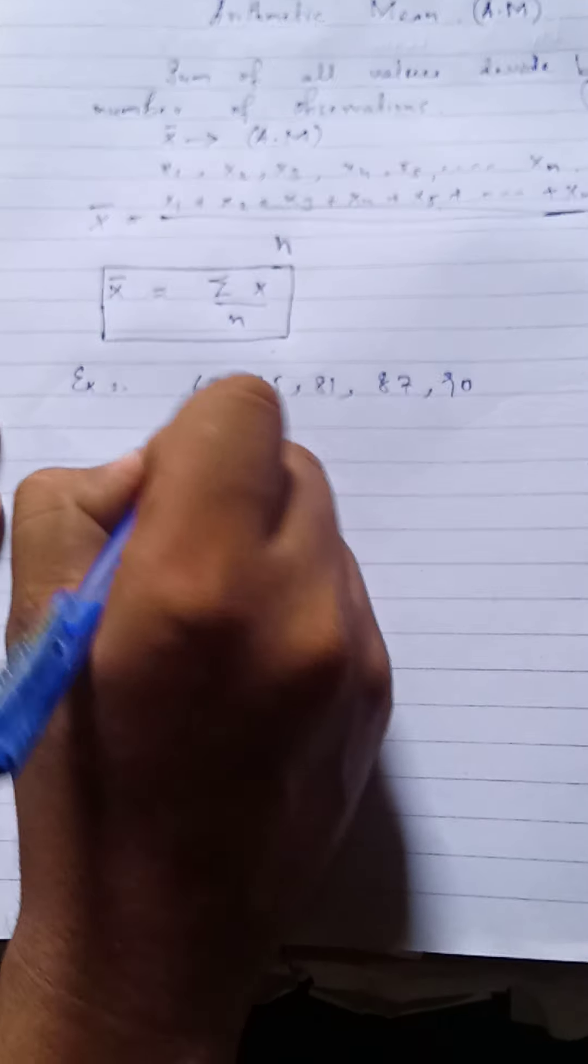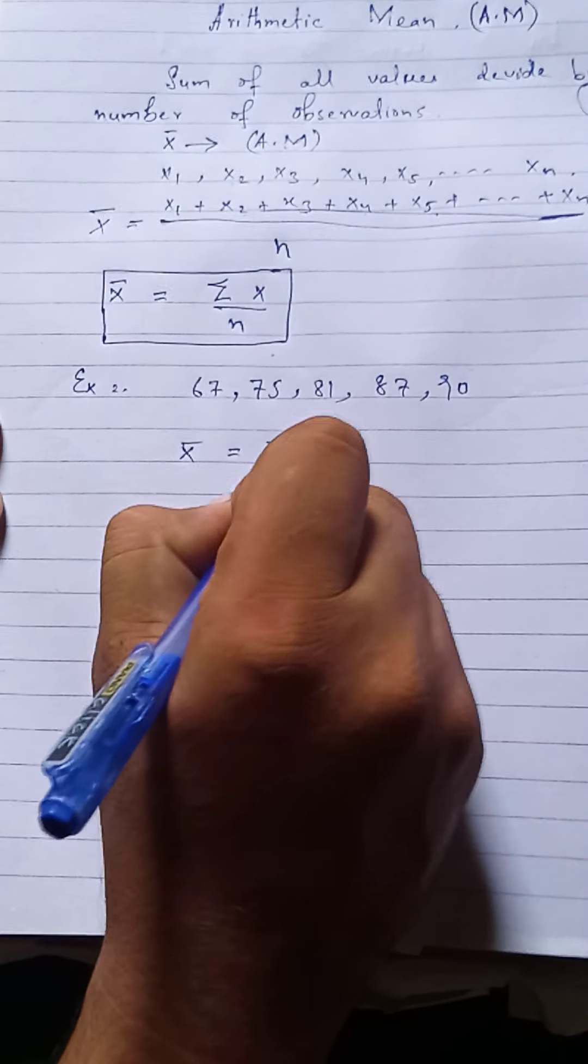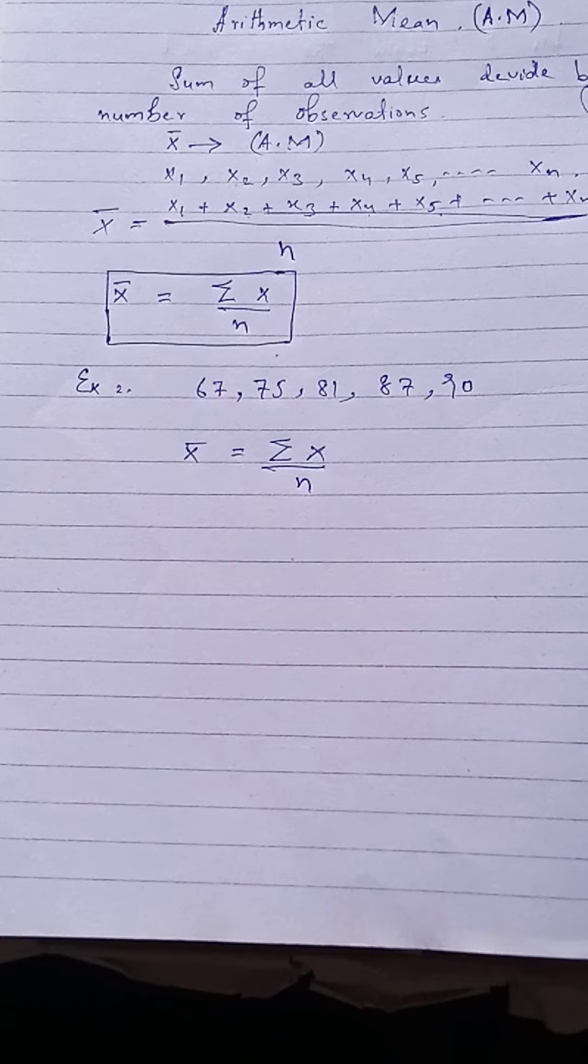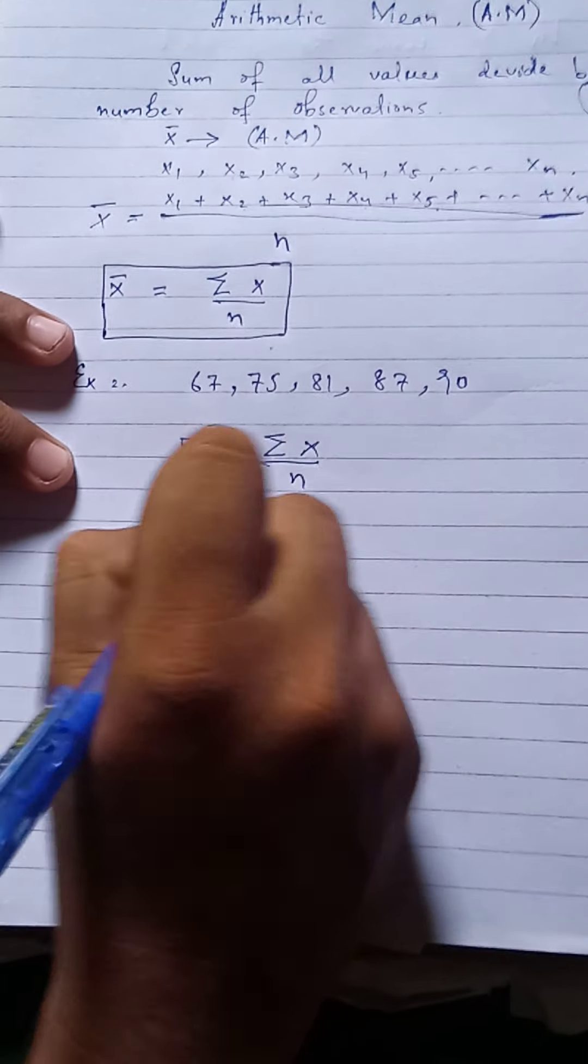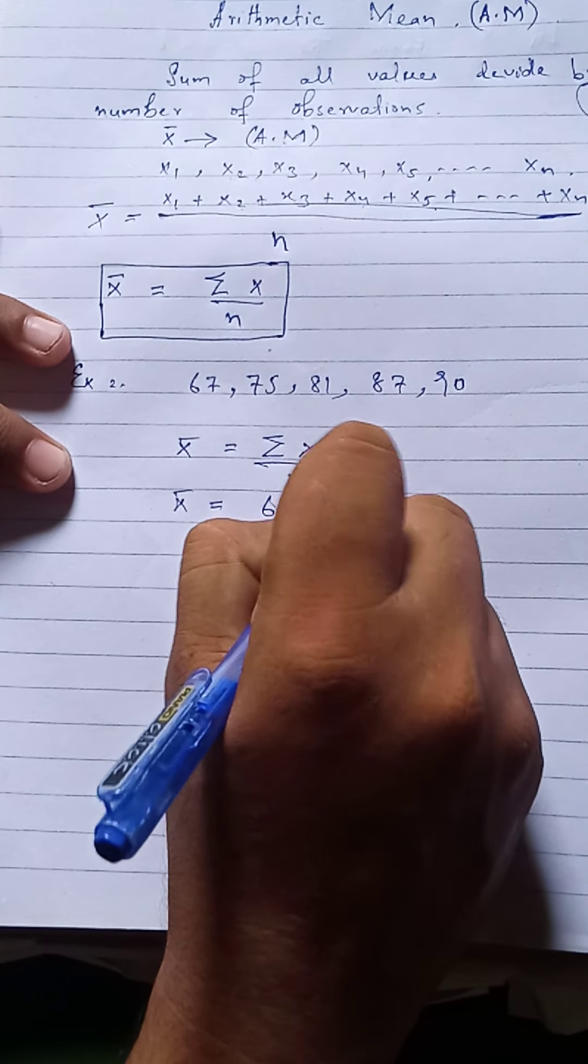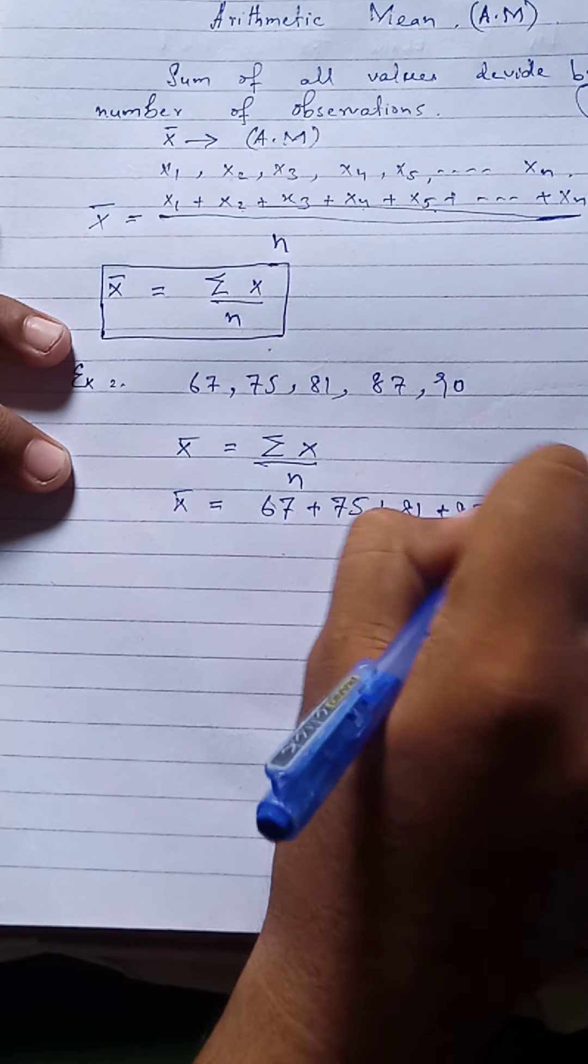अब इसकी हमें average कैसे निकालेंगे? Average का formula हमें पता है: summation of x divided by number of observations. तो summation of x कैसे करेंगे? x bar यह हो गया: 67 plus 75 plus 81 plus 87 plus 90.